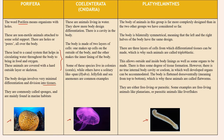Second is Cylenterata. These animals are living in water and show more body design differentiation. There is a cavity in their body, which is how they differ from the Porifera family. The body is made up of two layers of cells — one makes up the outside of the body and the other makes the inner lining. Some of these species live in colonies while others like hydra and jellyfish have solitary existence.